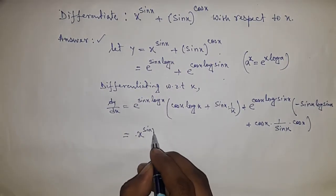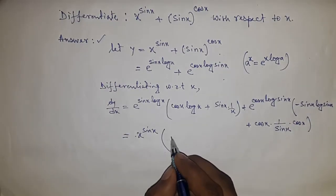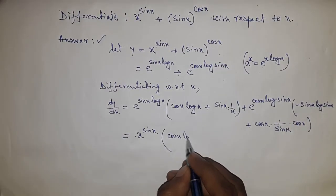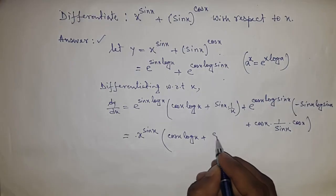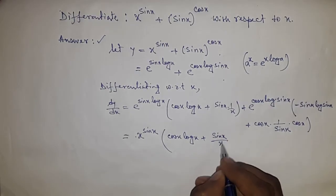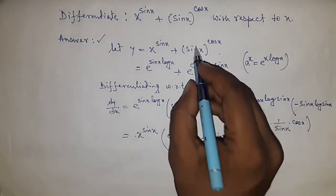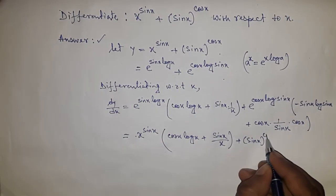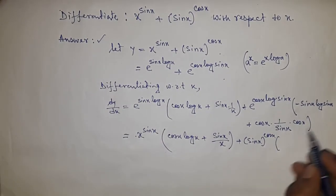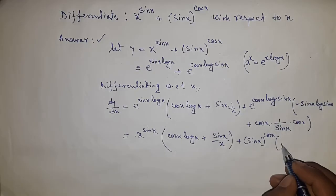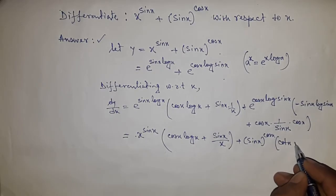x to the power sine x times (cos x log x plus sine x by x) plus sine x to the power cos x. We write the first with positive sign, so cot x, because cos x by sine x equals cot x, and sine x log sine x.